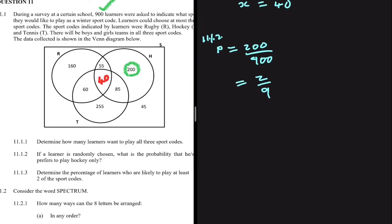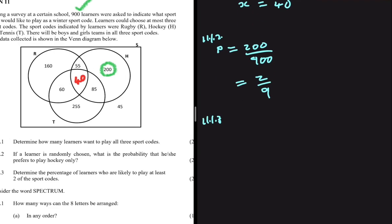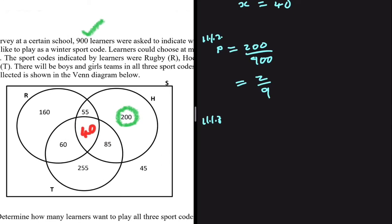Now for question 11.1.3: determine the percentage of learners who are likely to play at least two of the three sports. 'At least two' means we include any number that falls in the intersection of two or more circles. So: 55 learners prefer to play rugby and hockey — we include those. 60 prefer to play rugby and tennis — we include those. Playing all three also counts as at least two.